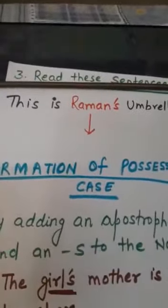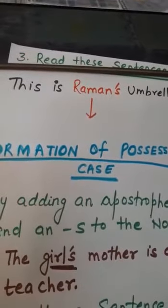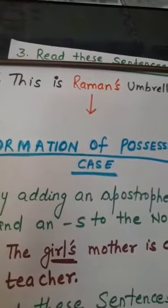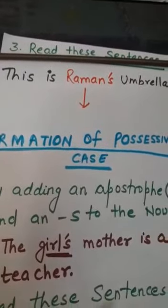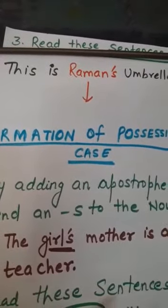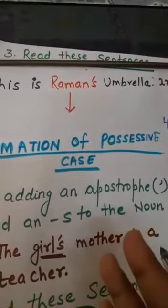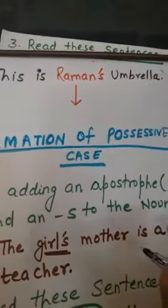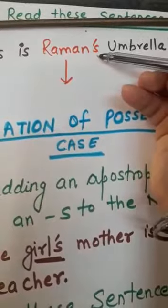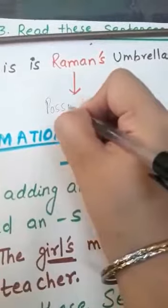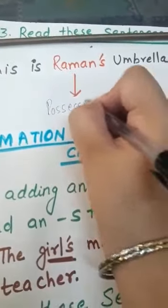Let's take one more example: this is Raman's umbrella. This sentence is said to be in which case — subjective, objective, or possessive? We ask the question 'whose umbrella?' — Raman's umbrella. We have apostrophe followed by s added to the noun, so this sentence is said to be in possessive case.